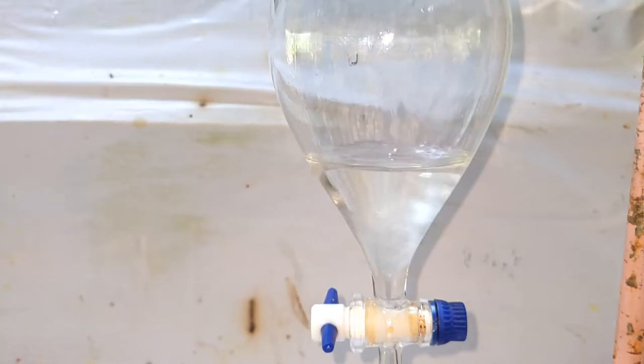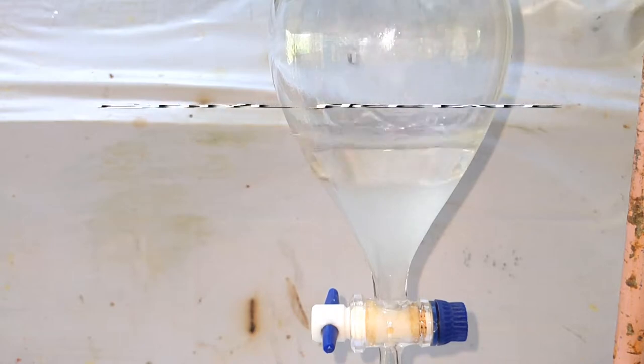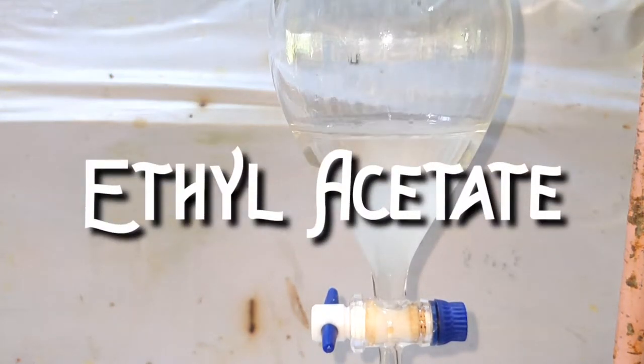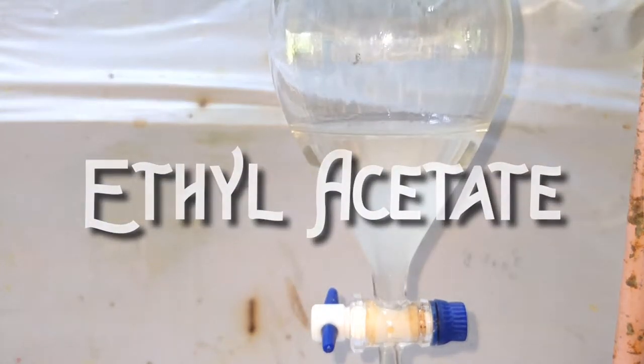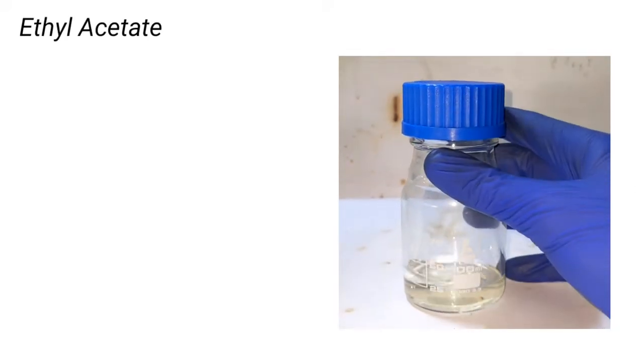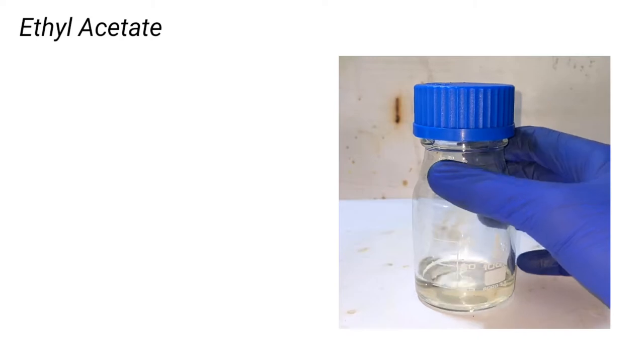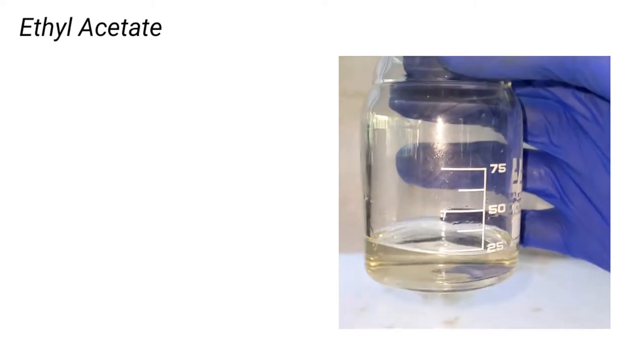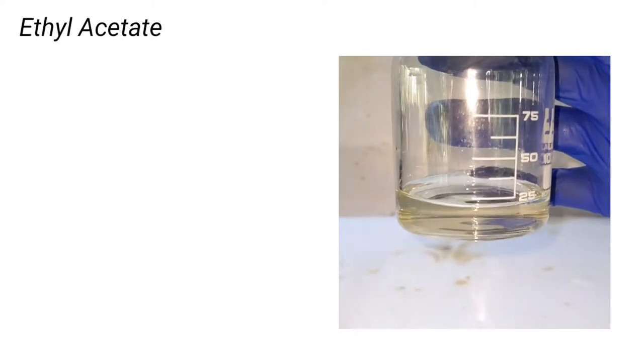Hello friends, in this video we will make ethyl acetate by the Fischer esterification reaction of acetic acid with ethyl alcohol. Ethyl acetate, or ethyl ethanoate, is an ester of acetic acid with ethyl alcohol. It is a colorless, clear solution which is highly volatile.